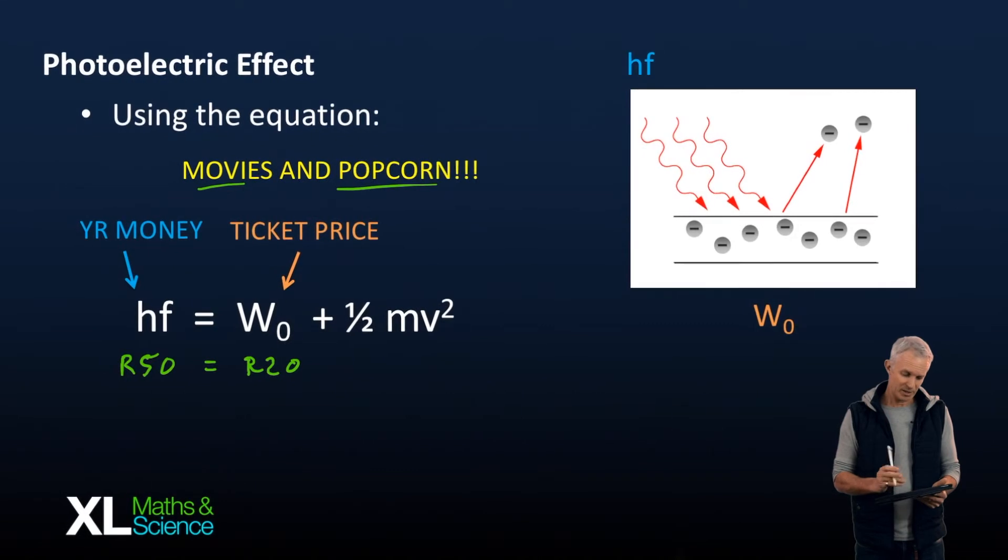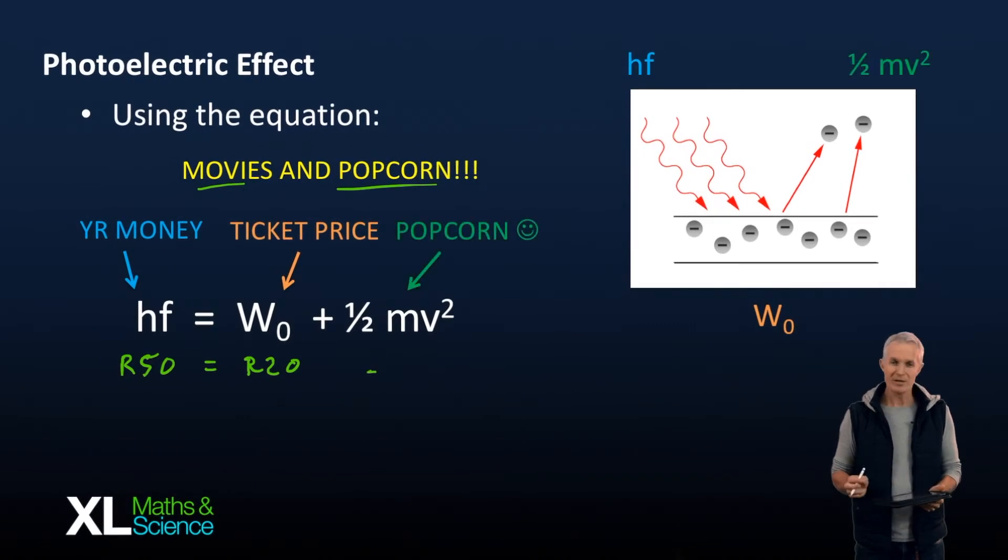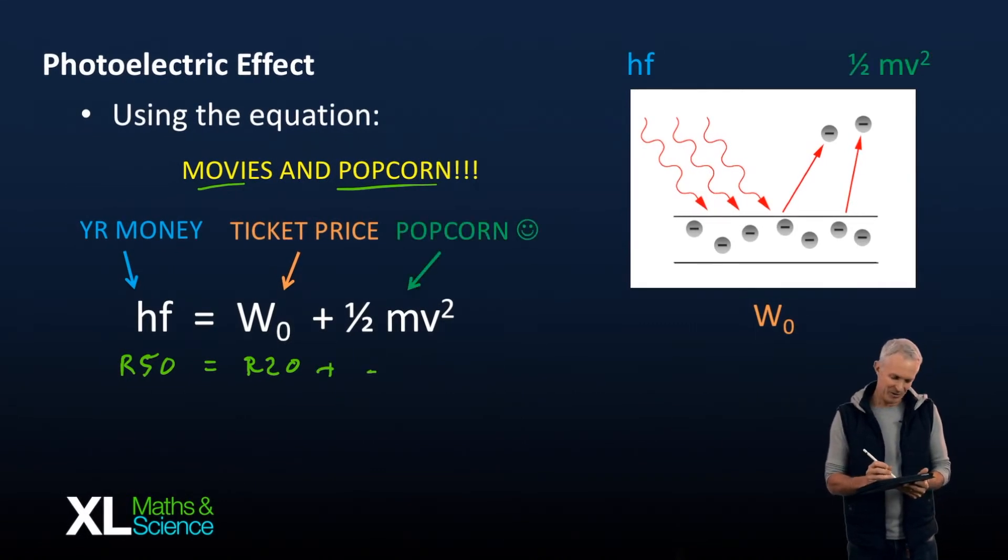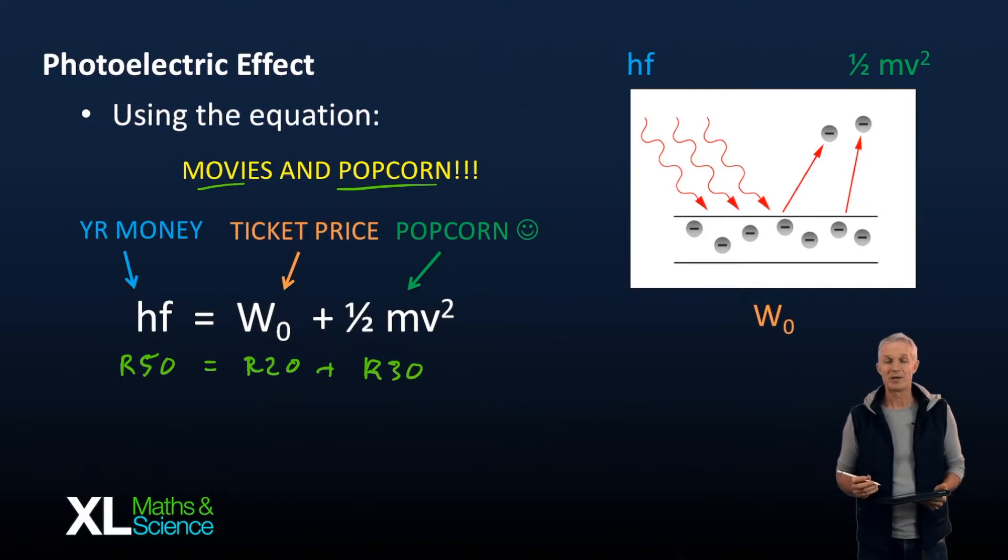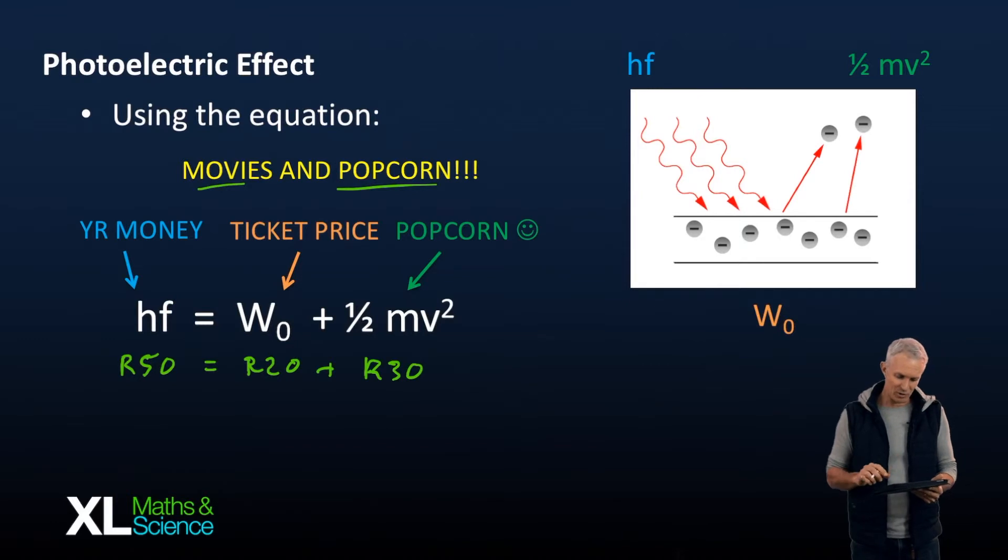Okay, then you've got 30 rand change. What are you going to do? Well, it's going to be popcorn, baby. So you've got 30 rand to go and buy yourself a nice big popcorn. That's an example of how the money thing works.